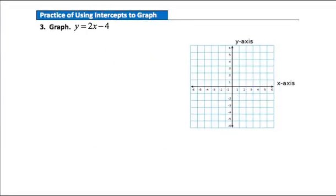Now let's practice another one. Notice this equation is organized a little differently. Before I had it in standard form — something x, something y equals some number. This form is called slope-intercept form, and we'll get more into that later on. But we can still graph this equation by finding the intercepts. Pause your video player and graph this equation using the intercepts.